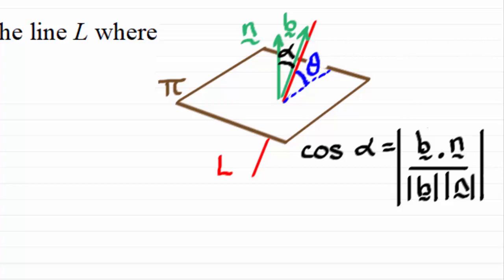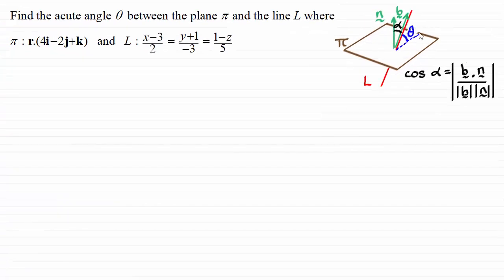So we next need to establish the normal to the plane and the vector b parallel to the line. So if you're familiar with the dot product form of the equation of a plane, you'd know that the coefficients of i, j and k, which in this case are 4, -2, and 1, represent a vector which is perpendicular to the plane.